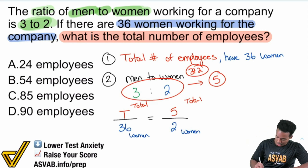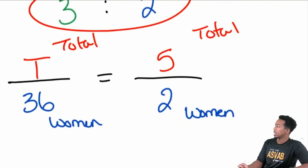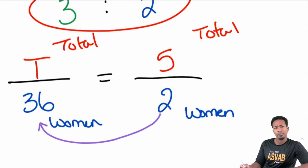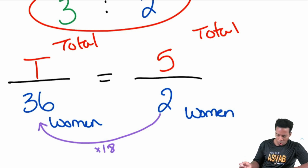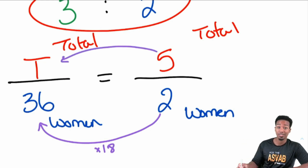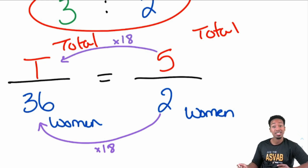We can use cross multiplication and division, or we can use comparisons — comparing the same things in the same way. Watch this: how do I go from right to left, 2 to 36? That is times 18. If we do the same thing with 5, multiply it by 18, that gives us T. So all you need to do is 5 times 18, and that'll give you the answer.